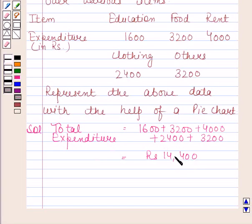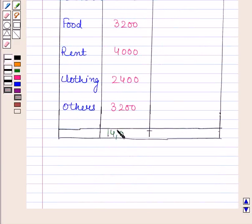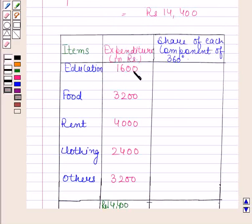Now we will make a table. In the first two columns we have written the given information. Now we will convert expenditure on different items into component parts of 360 degrees. Total expenditure is 14400 rupees. Expenditure on education is 1600, so we have 1600 divided by 14400 multiplied by 360 degrees, and this is equal to 40 degrees.